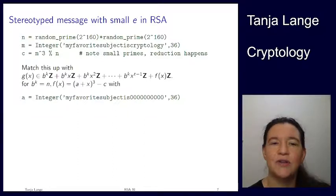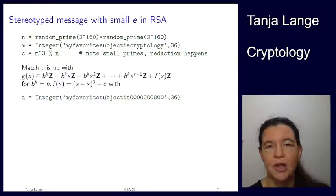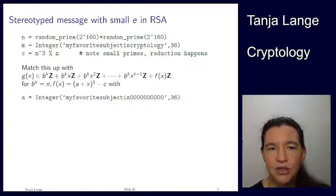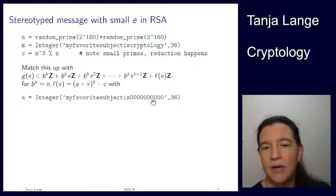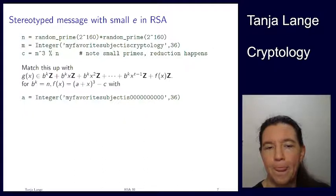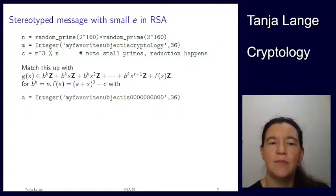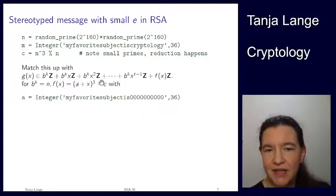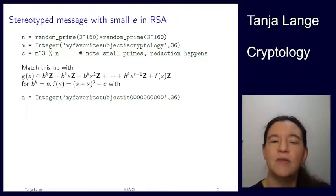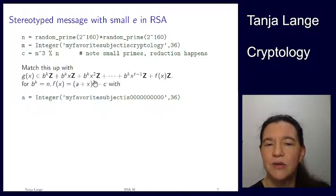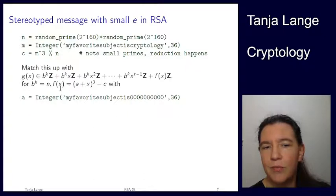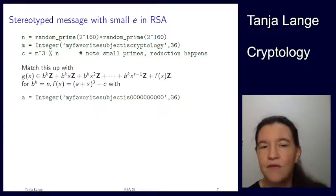If you know the text comes from such a form where you only don't know the last part, we can match this with the Howgrave-Graham idea. In this case we're not aiming to factor n but to recover the message. We know the message is a known prefix given by a, plus an unknown suffix x, and we know the ciphertext — so the polynomial (a+x)³ − c ≡ 0 mod n for the right value of x.